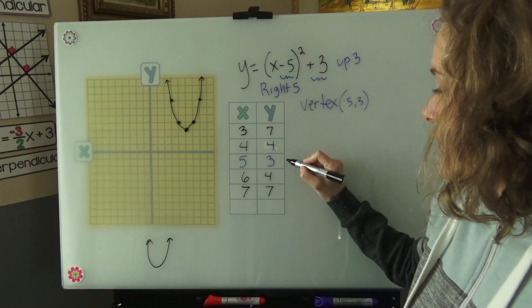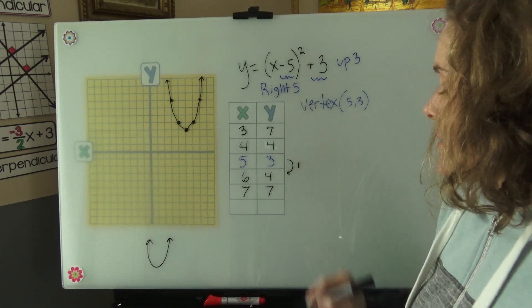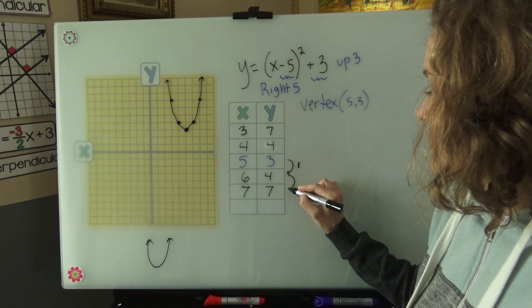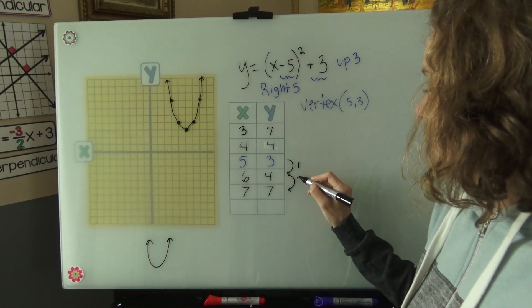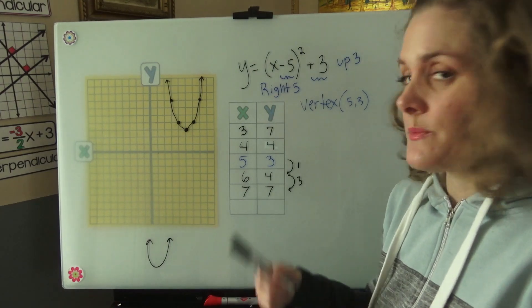When I go from 3 to 4, I go up 1. When I go from 4 to 7, I go up 3. Let's do one more just so we can see the pattern really well.